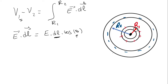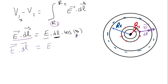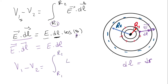The definition of E vector times dl is E dl cosine of theta, where theta is the angle between the displacement vector and the electric field direction. In this case, the electric field is outward, and since we go from R1 to R2, our displacement dl is also outward. That means theta is zero, cosine of zero is one, so E vector times dl is just E dl. Since dl is radial, we replace it with dr.